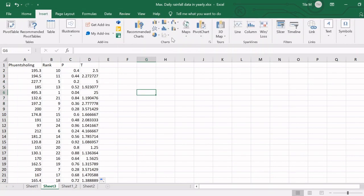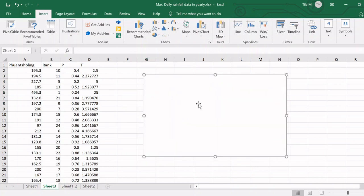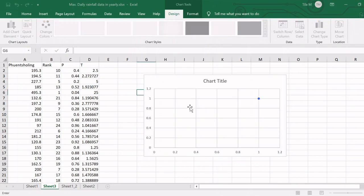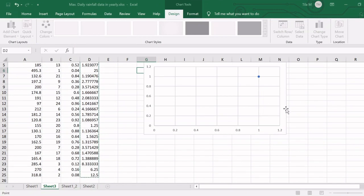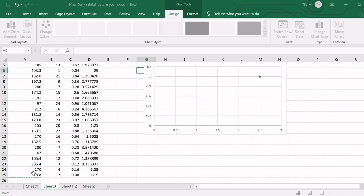For this, go to insert, insert scatter type plot. Now here you can select the data, add a series. Series name, you can name it. X values, I want this time period. And for Y values, I want the magnitude of the rainfall. And then I get a chart.